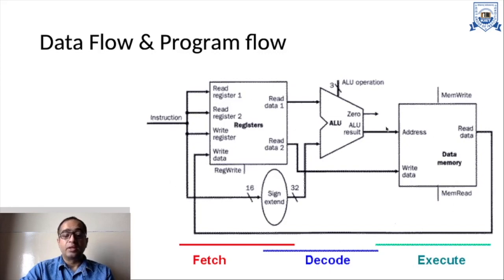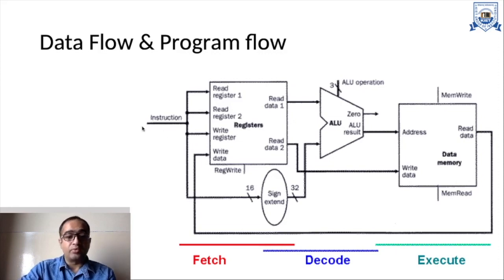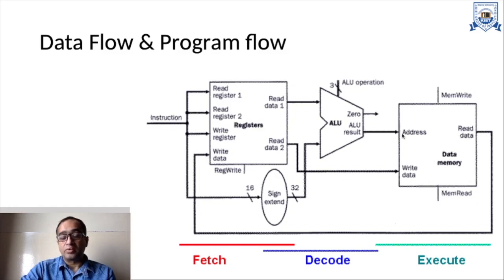In the data flow and program flow, this is the entire flow which you can see in this diagram. As you can see, this is the memory part. In the memory you have the read data, memory write, memory read, the address of the memory, and the write data — these are the pins in the memory.